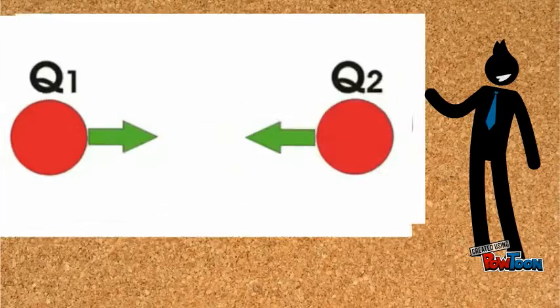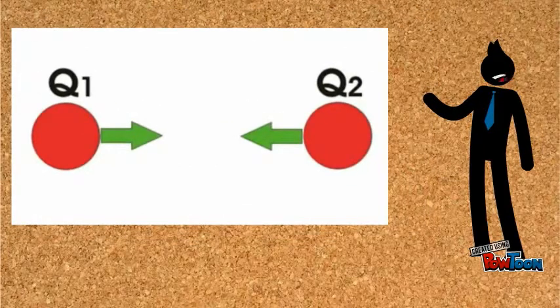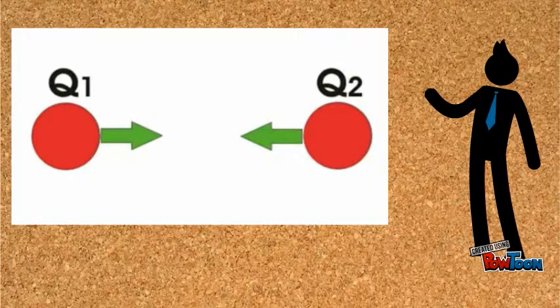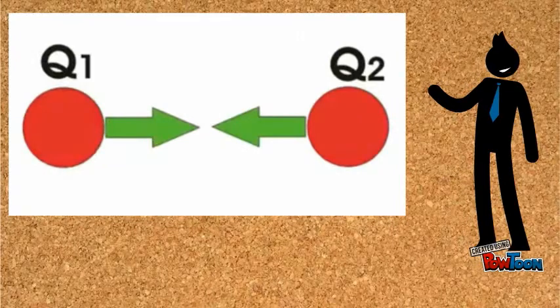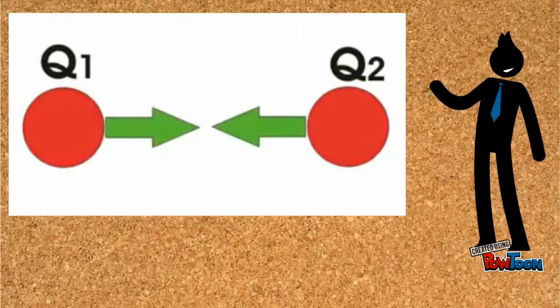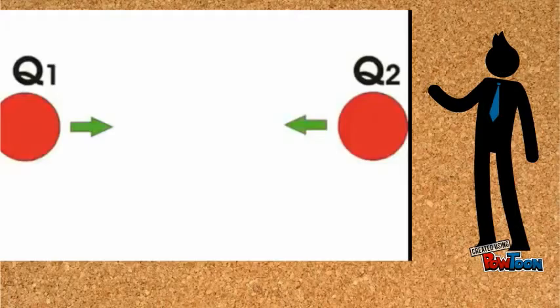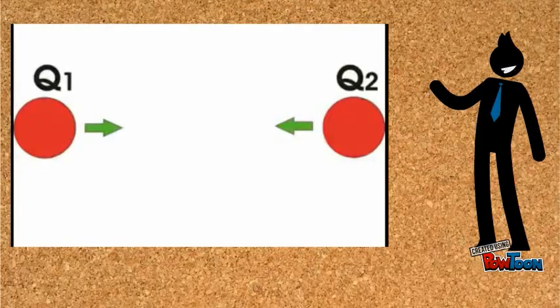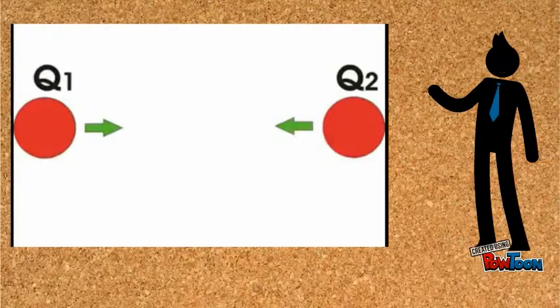Now, by keeping their charge fixed at Q1 and Q2, if we bring the charged bodies nearer to each other, the force between them increases. If we take them away from each other, the force between them decreases.